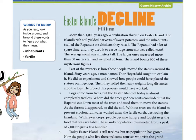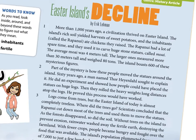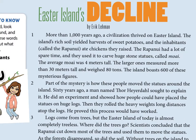Easter Island's Decline, Paragraph 1: More than 1,000 years ago, a civilization thrived on Easter Island. The island's rich soil yielded harvests of sweet potatoes, and the inhabitants called the Rapa Nui ate chickens they raised. The Rapa Nui had a lot of spare time and used it to carve huge stone blank called moai. The average moai was 4 meters tall; the larger ones measured more than 30 meters tall and weighed 80 tons. The island has 600 of these mysterious figures. Several of you typed the word 'statue' in the chat bar — good job.